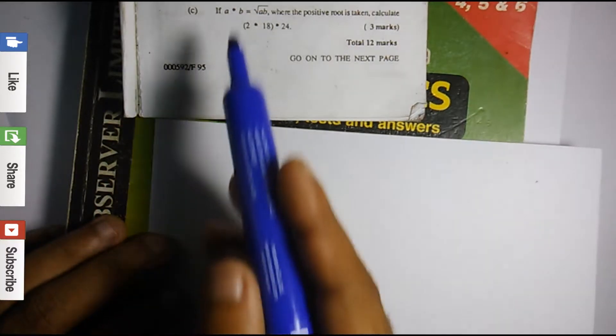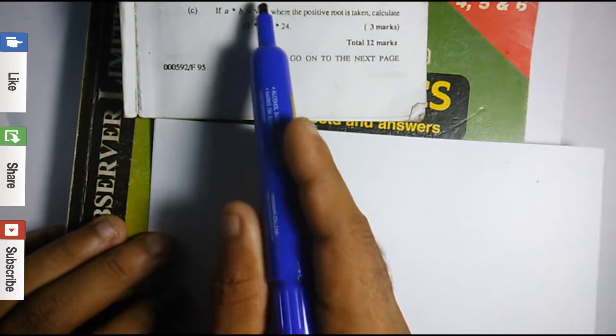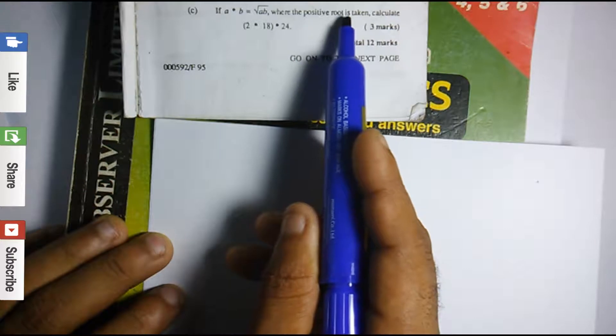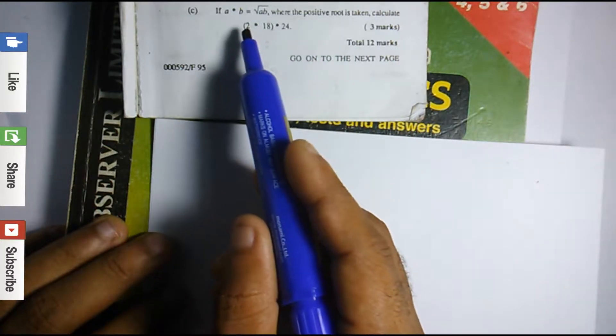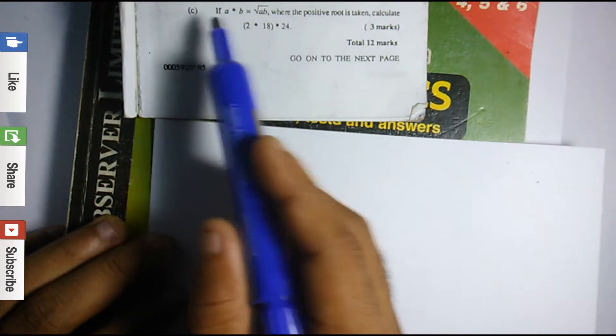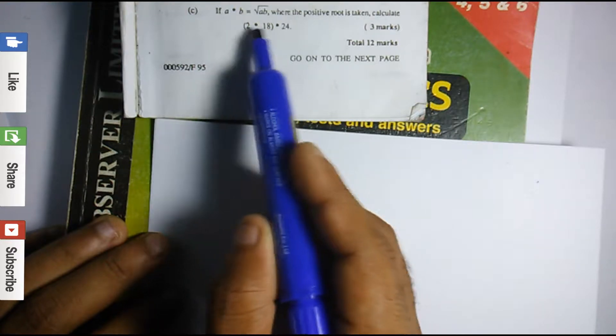With this particular question, if a asterisk b equals the square root of ab, where the positive root is taken, calculate 2 asterisk 18 asterisk 24. Now we have two letters and three numbers, so the best thing we need to do is match up the two in the bracket first before we do anything else.